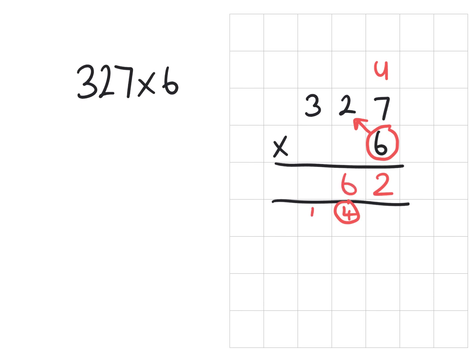Carry the 100 over. Then we have the 6 times the 3 which is 18 plus the 1 which is 19 for a final answer of 1962.